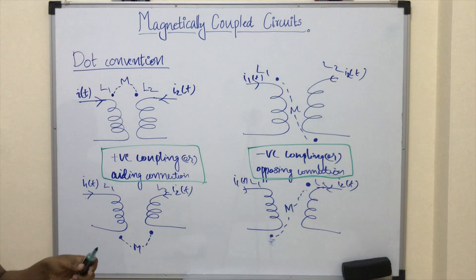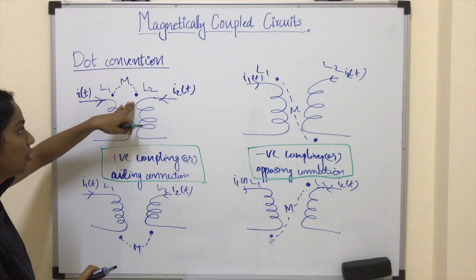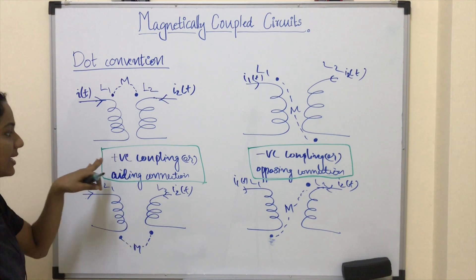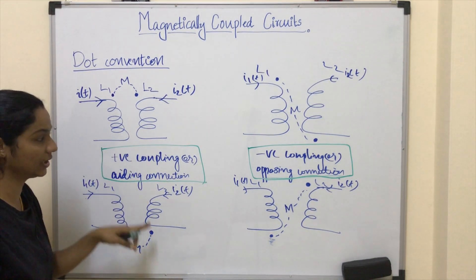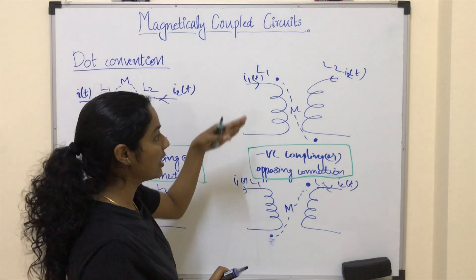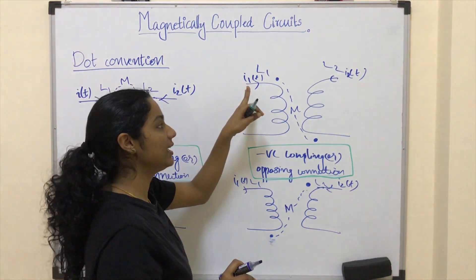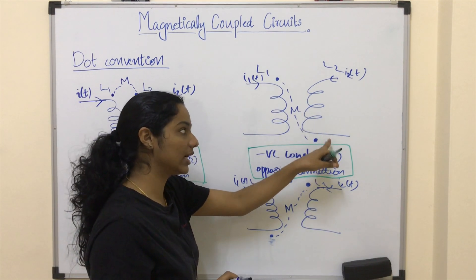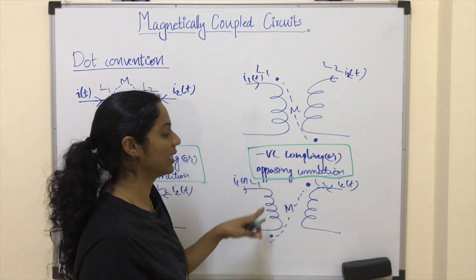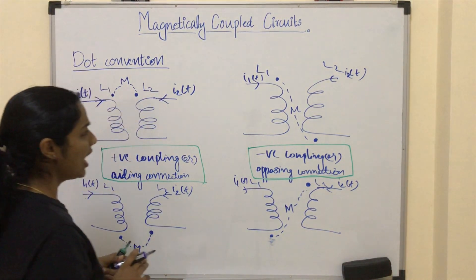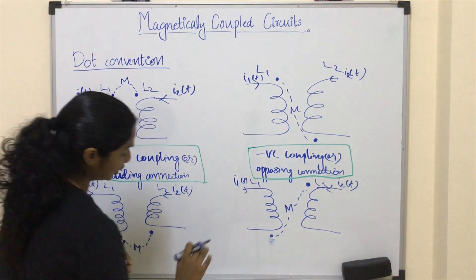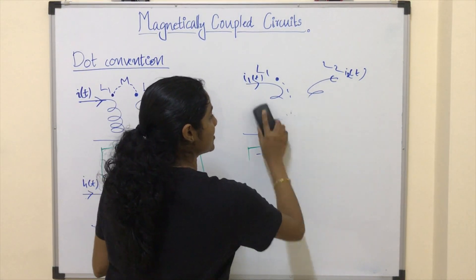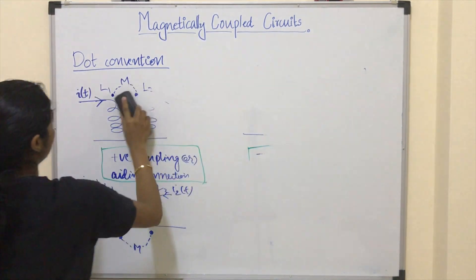In general, if we mark a dot on the entering side of both coils, or the leaving side of both coils, then it is an example of positive coupling or aiding connection. If the current enters through one terminal and we mark the dot on the leaving side of the other terminal, we consider it as negative coupling or opposing connection. Let's go through a small explanation for better understanding.